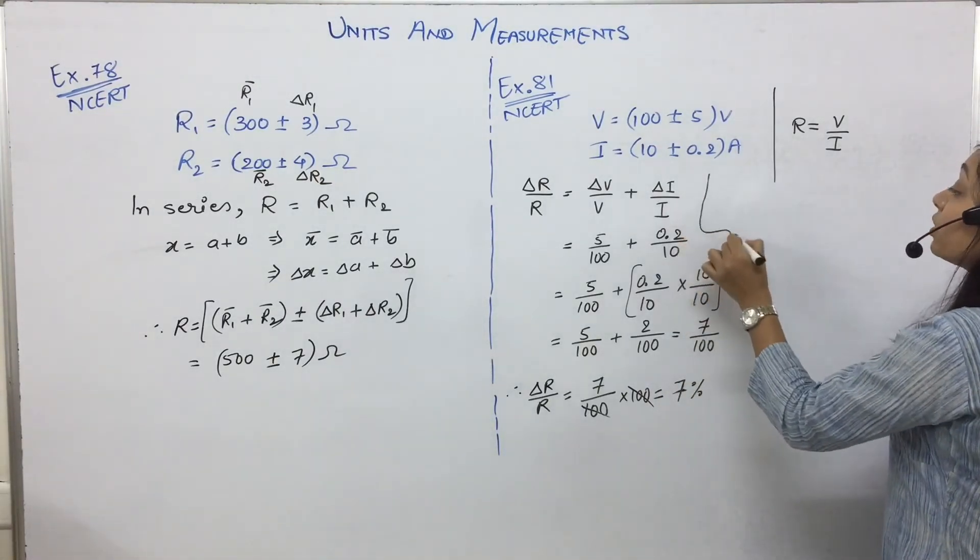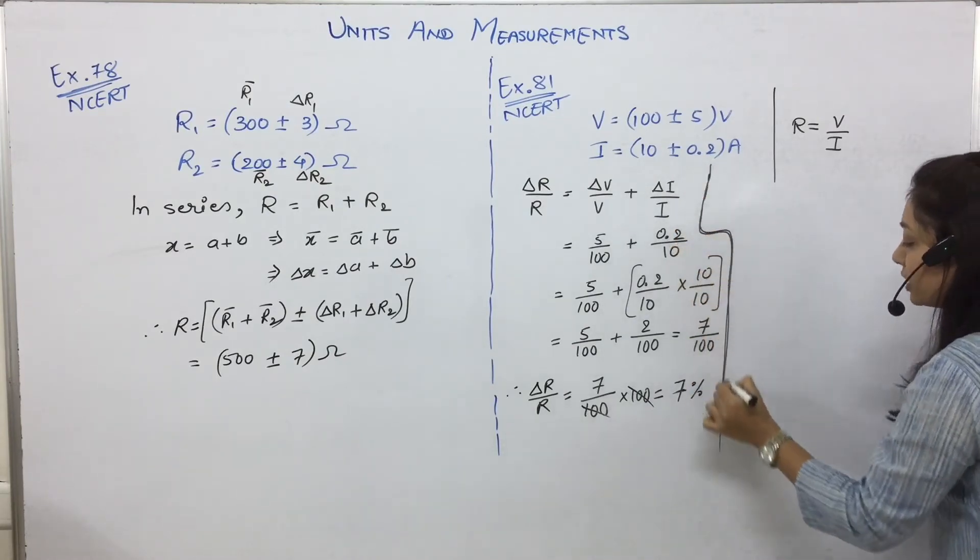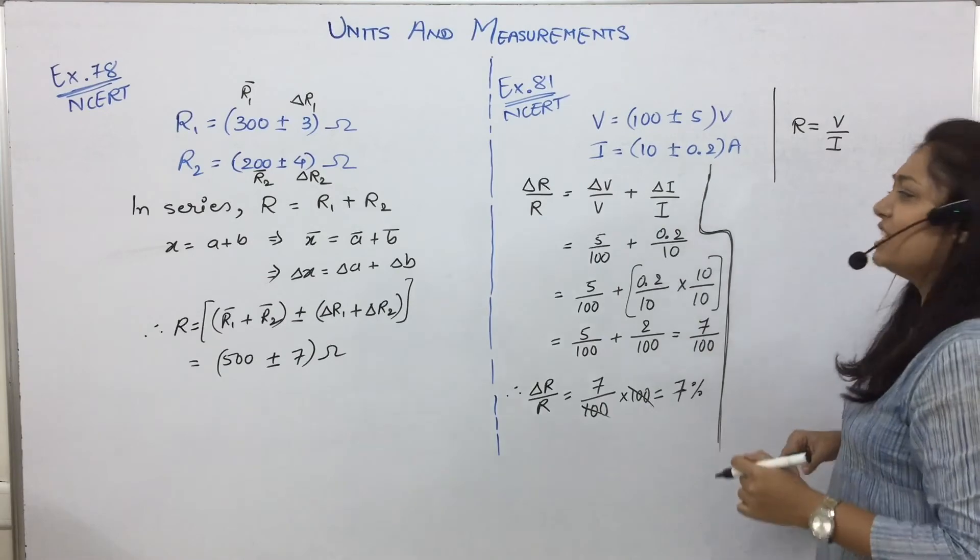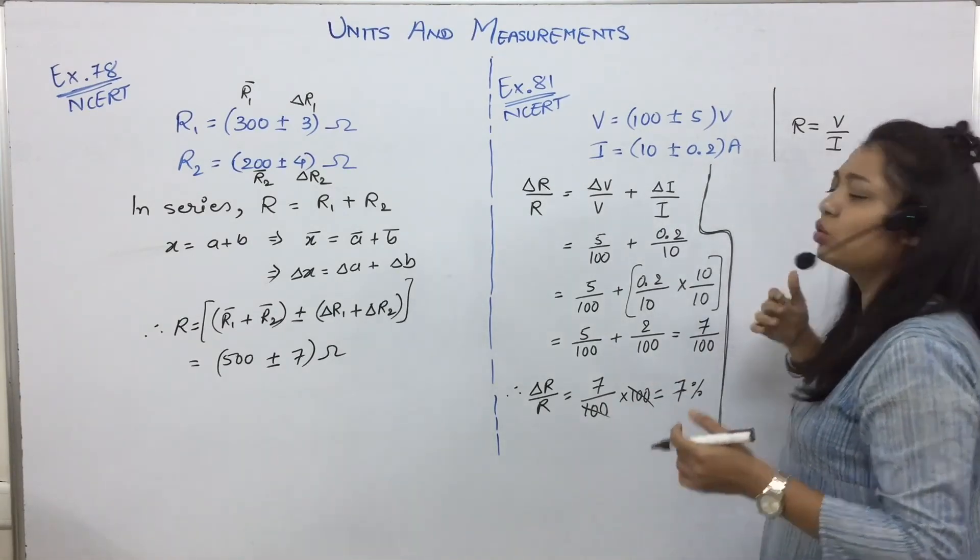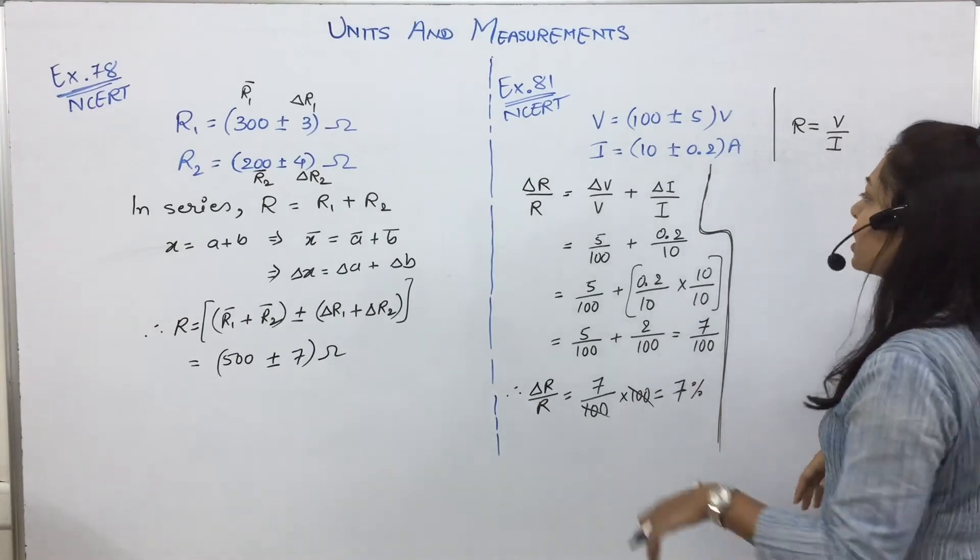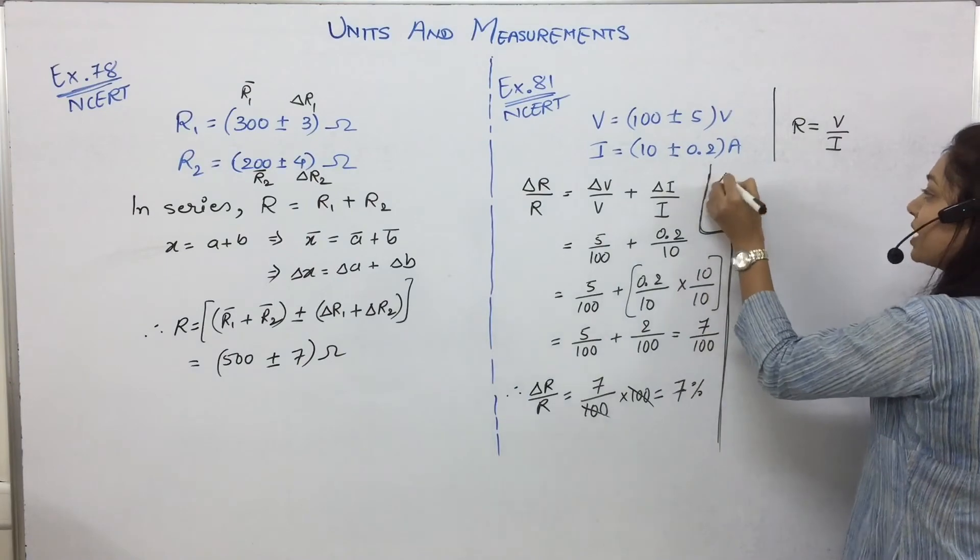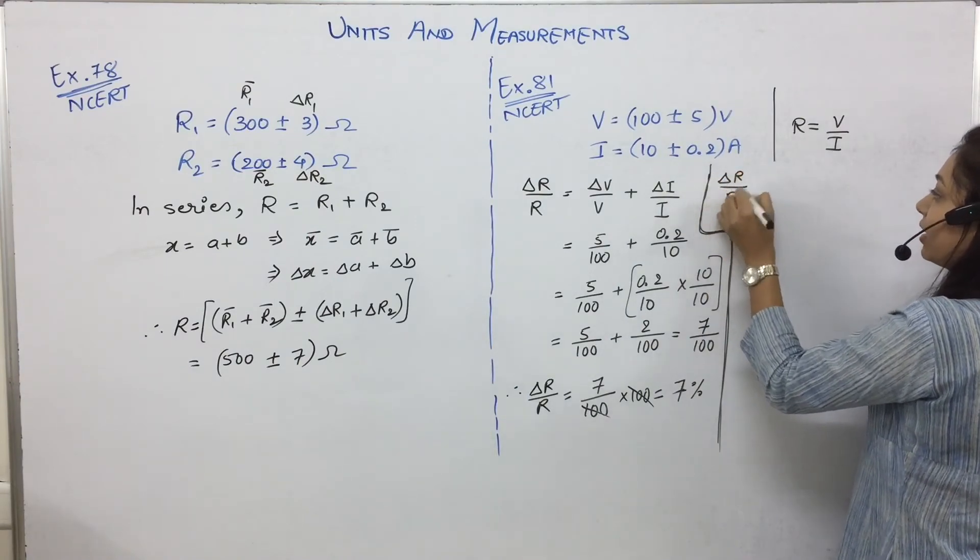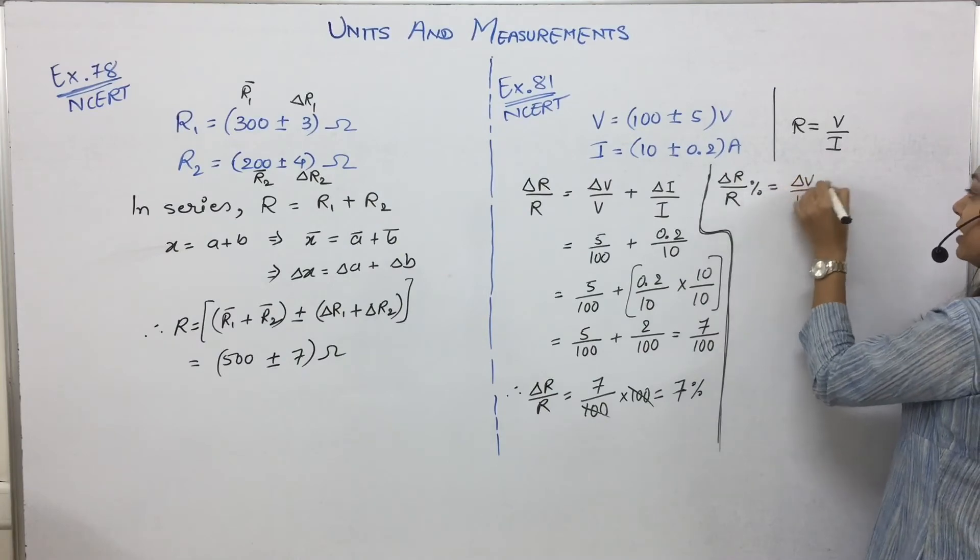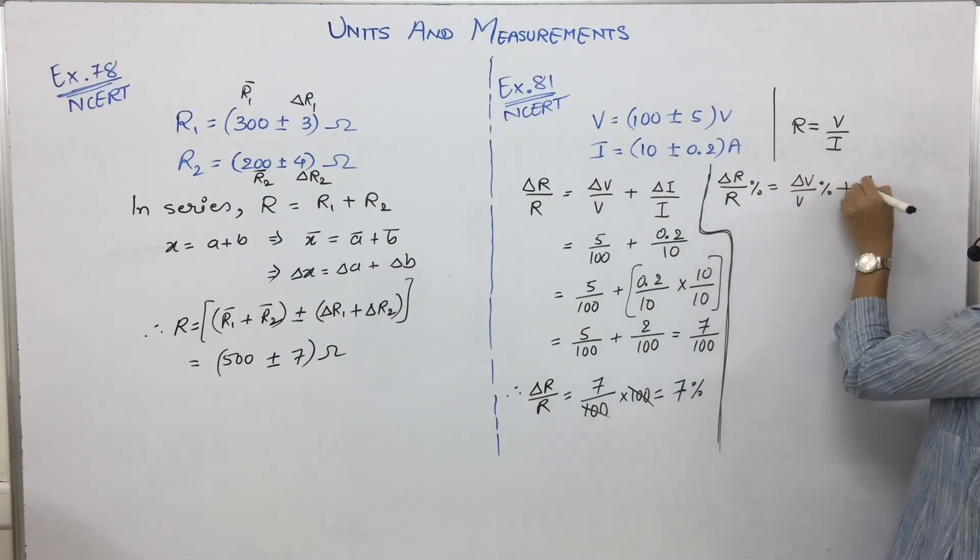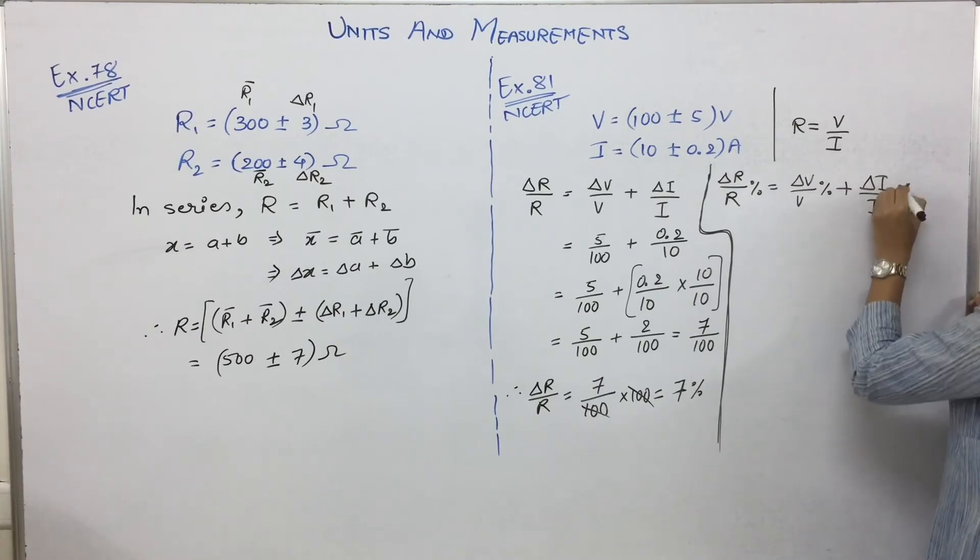Okay, this is one more method that I can show you, which is alternate to this. We can directly start with percentage substitution. Delta R by R percentage is equal to delta V by V percentage plus delta I by I percentage. Clear? When we write percentage, it means we will multiply that value by 100.